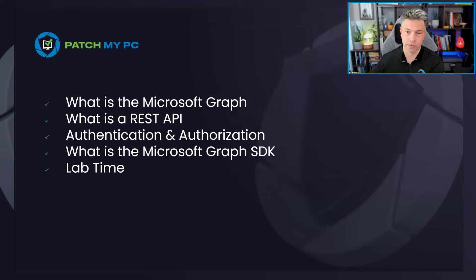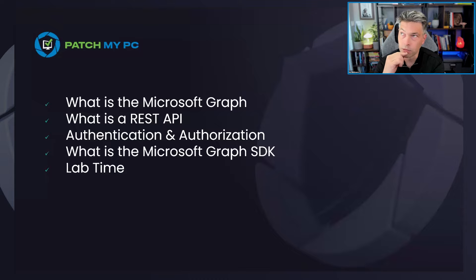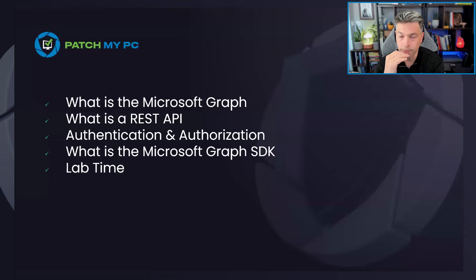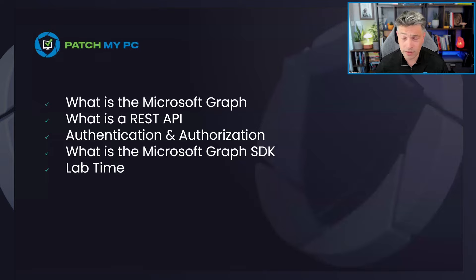We're going to focus on some high-level concepts in the PowerPoint: what is the Microsoft Graph, what is a REST API, authentication and authorization, scopes, and delegated auth flow. The main reason we're here today is to talk about the Graph SDK — SDK commands, why the SDK is good, why you might not want to use it, and how to make native calls to the Graph instead. Most of the time we'll spend in the lab.